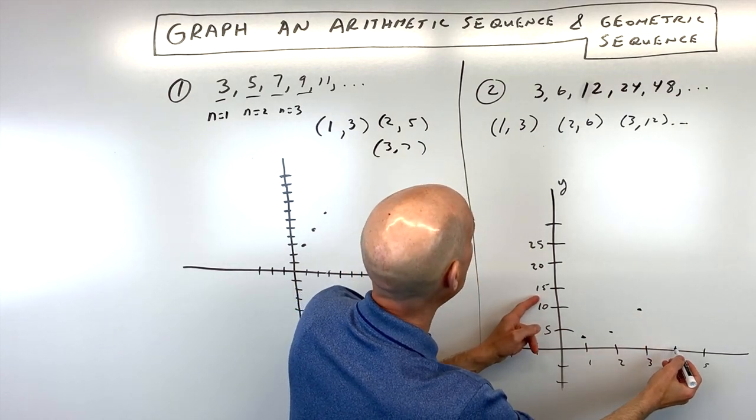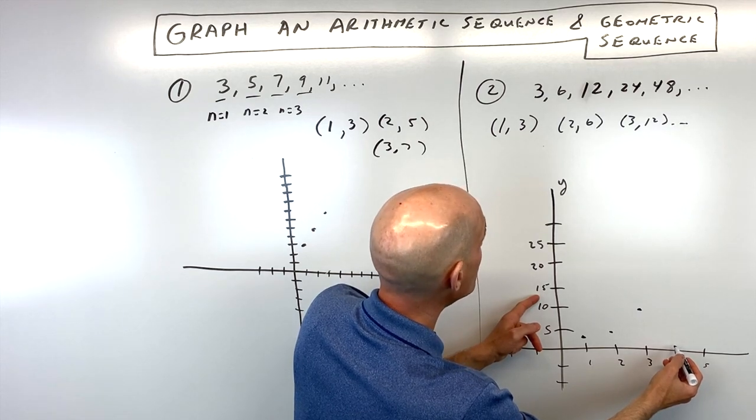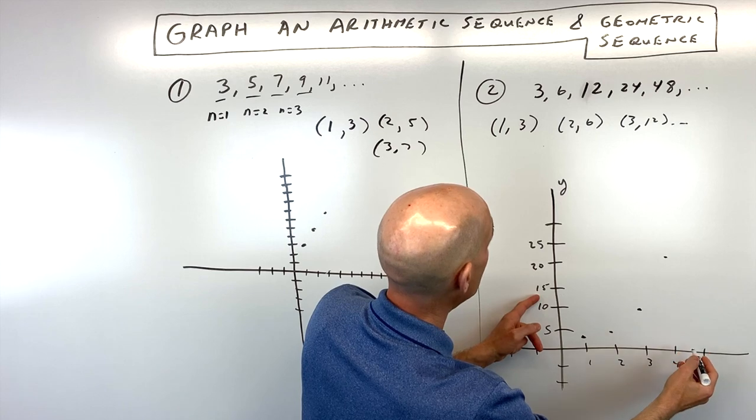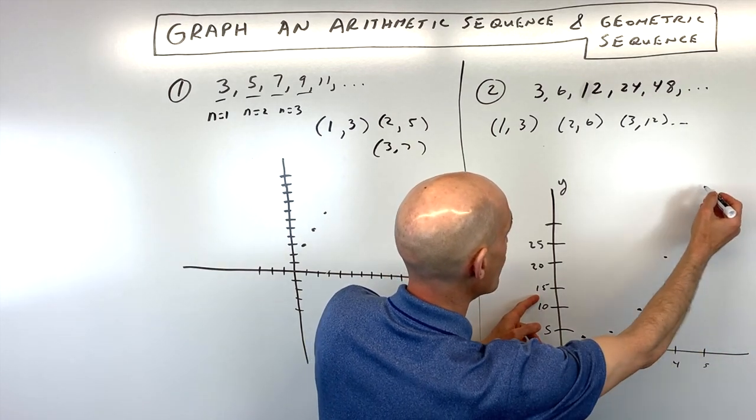I'm counting by 5s on the Y. Let's see, 4 would be 24. So now we're up here, and then term number 5 is going to be 48, way up here.